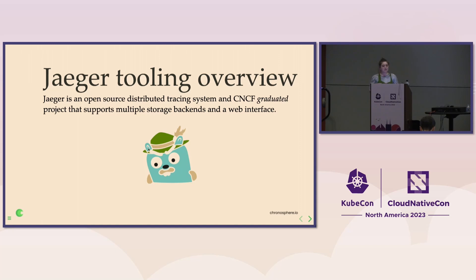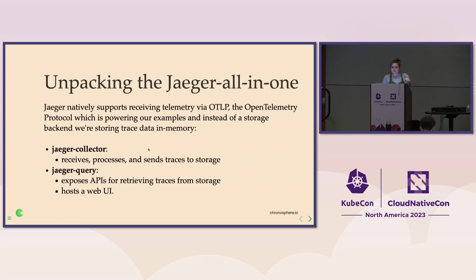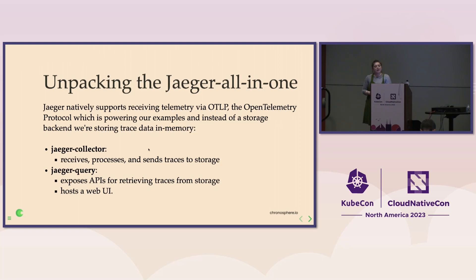We use Jaeger today for the UI. If you want to self-host distributed tracing backend and UI, that is also what some companies do. For Jaeger all-in-one, there are two components you should know about: the collector — similar to the OTEL collector, it receives, processes, and sends trace data — and Jaeger query, which exposes APIs for retrieving traces, and of course the beautiful web UI that we are going to get very comfy with soon.